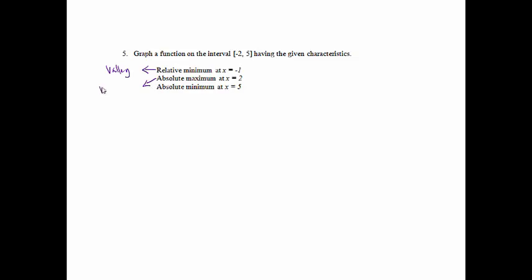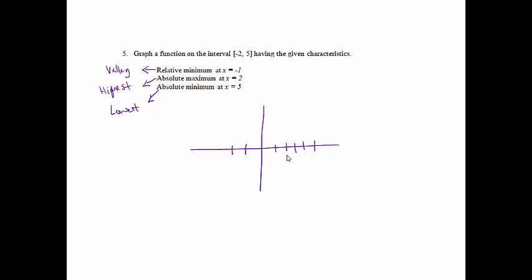The absolute maximum means this is going to be the highest the graph ever reaches. The absolute minimum is the lowest the graph ever reaches, and it goes from negative 2 to 5. At x = 2, the graph is not going to reach any higher than that. At x = 5, the graph will never go any lower than that.